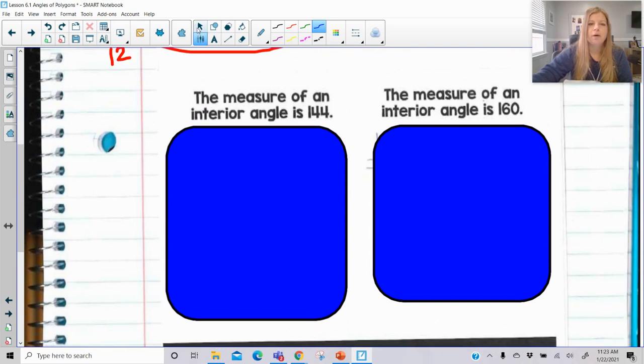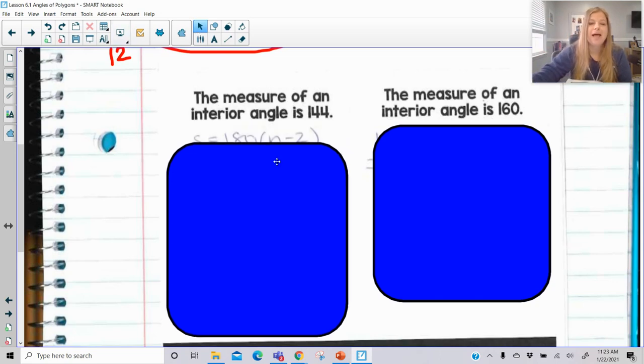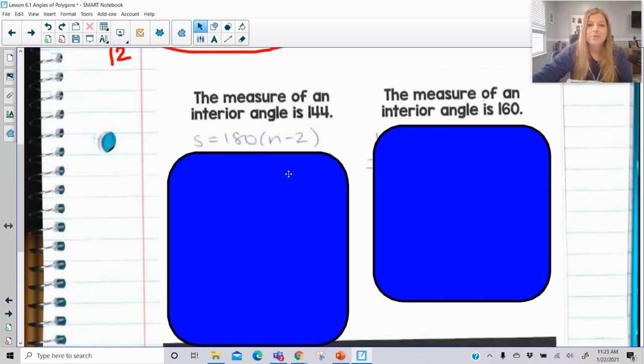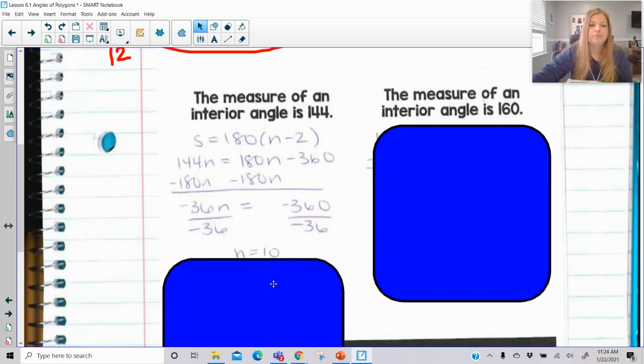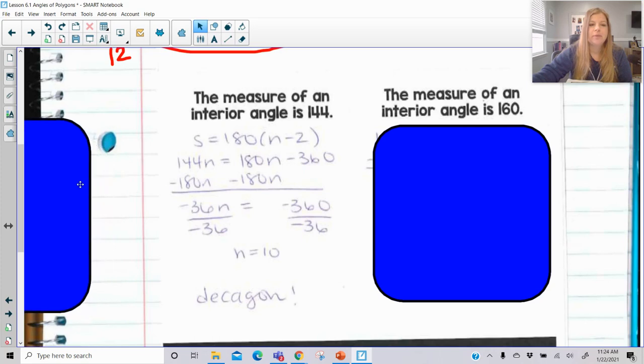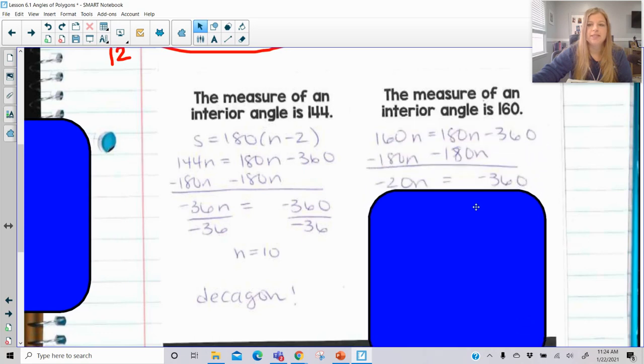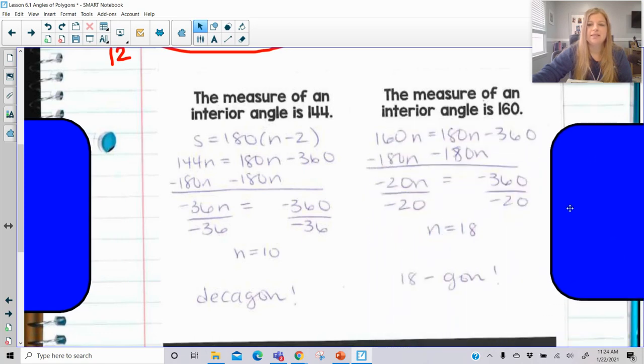These next two, if you want to go ahead and pause and try them out, it's the same process, just different numbers. And then press play when you're ready. Okay, so I'm going to hope that you press play now at this point. And you can see what I'm substituting in. Now I'm getting my results. That one ends up being a ten-sided figure, which is the decagon. And then if the interior angle is 160, I end up getting an eighteen-sided figure, which we just referred to as an 18-gon.